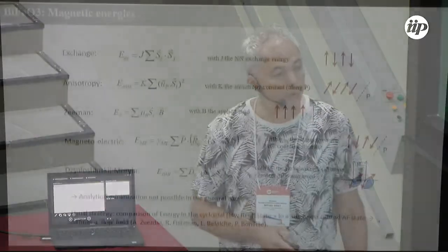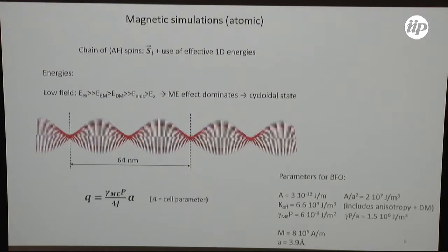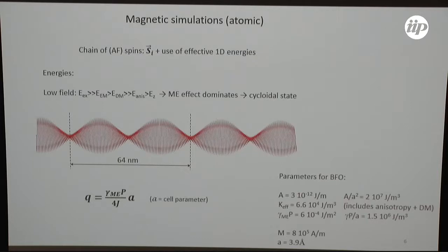All this energy cannot be minimized analytically in the general case, so we have to make approximations. If you take exactly the numbers for bulk BFO, you find that the dominant energy term is the coupling between E and M — the magnetoelectric term — which gives long-range cycloids. The cycloid period is given basically by the ratio of the magnetoelectric energy divided by the exchange energy, and you find about 64 nanometers for bulk BFO with normal parameters. So it's a G-type antiferromagnet with a long-range cycloidal structure on top of it.